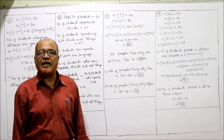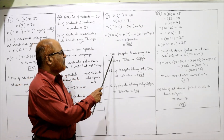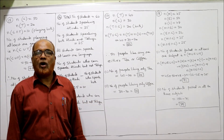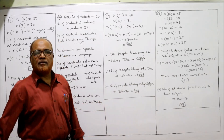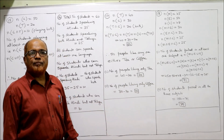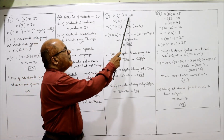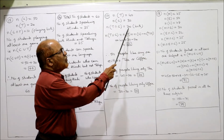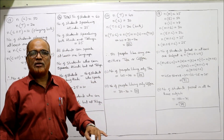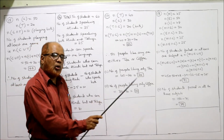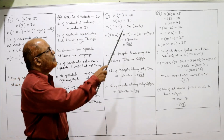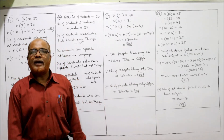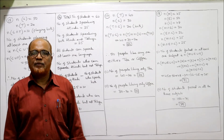Now for the specific questions: How many people like only tea? Total people who consume tea is 40. People who consume both tea and coffee is 20. So 40 minus 20 equals 20. Therefore, 20 people like only tea, not coffee.